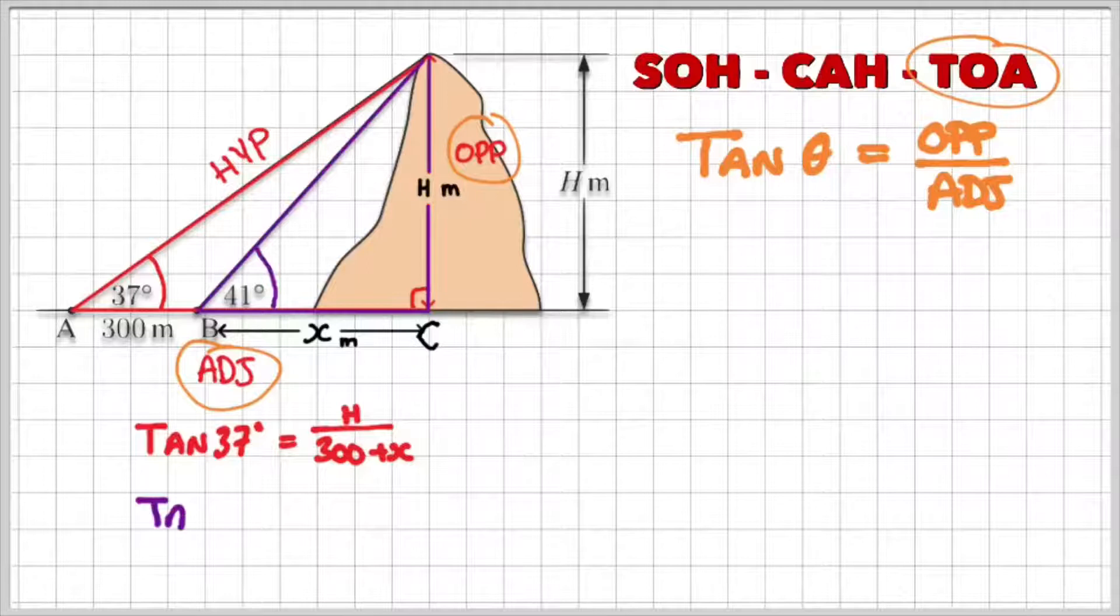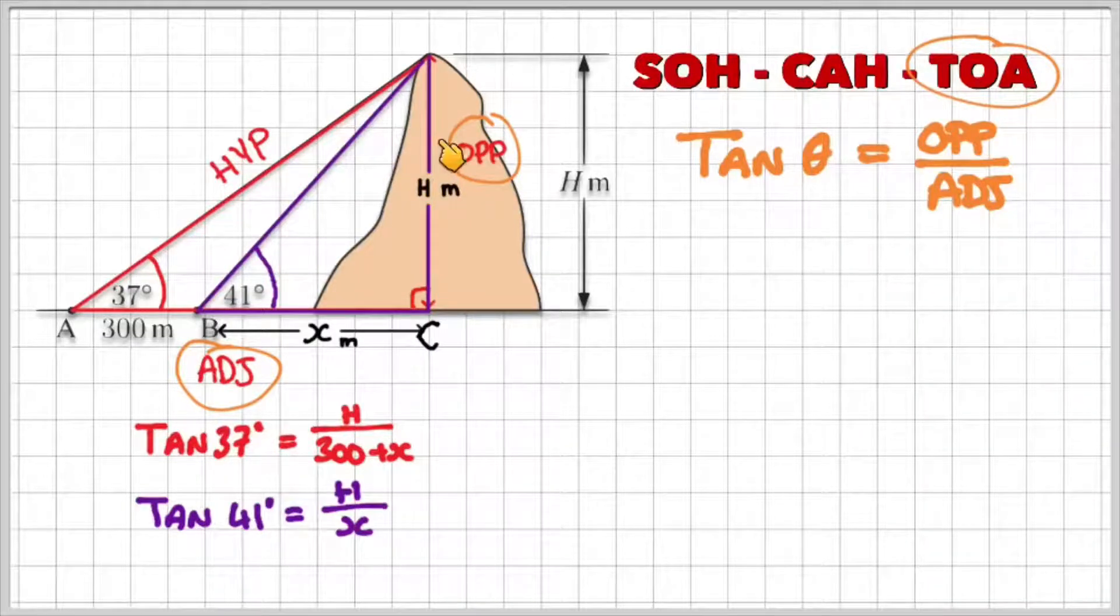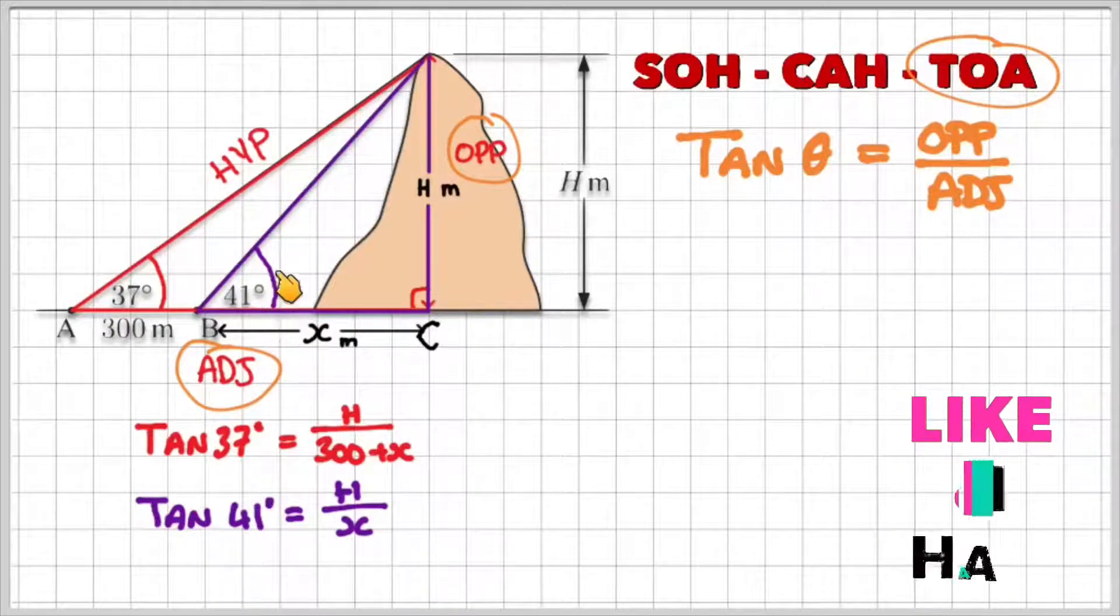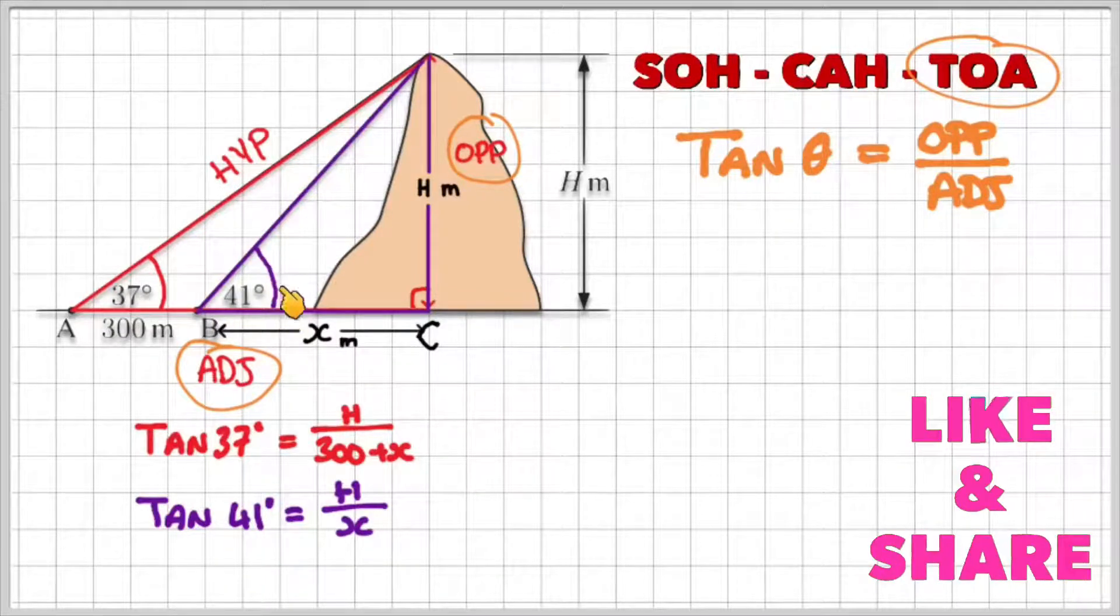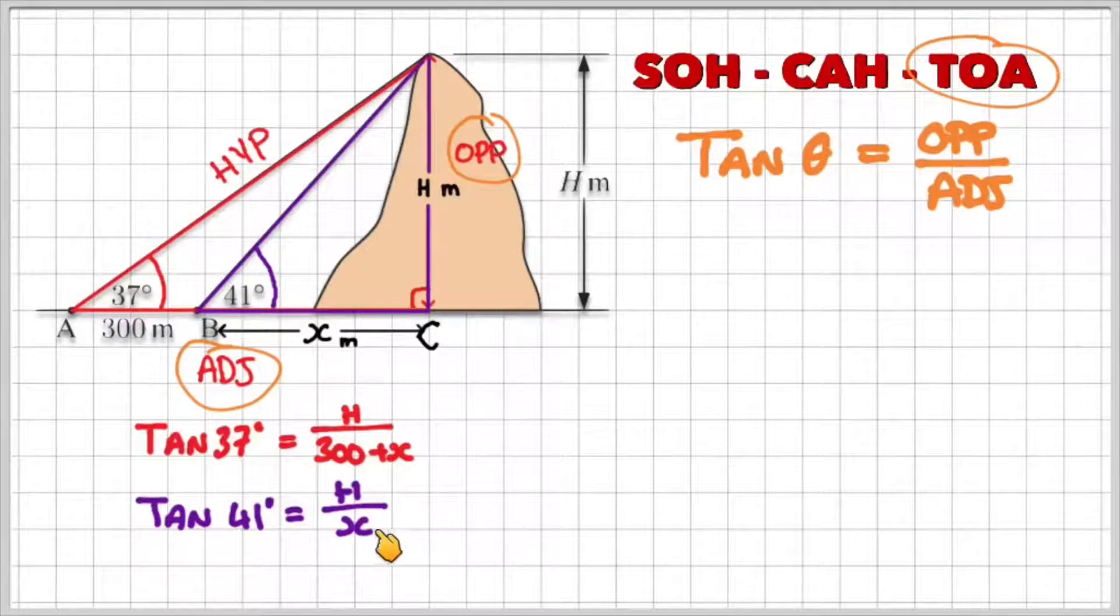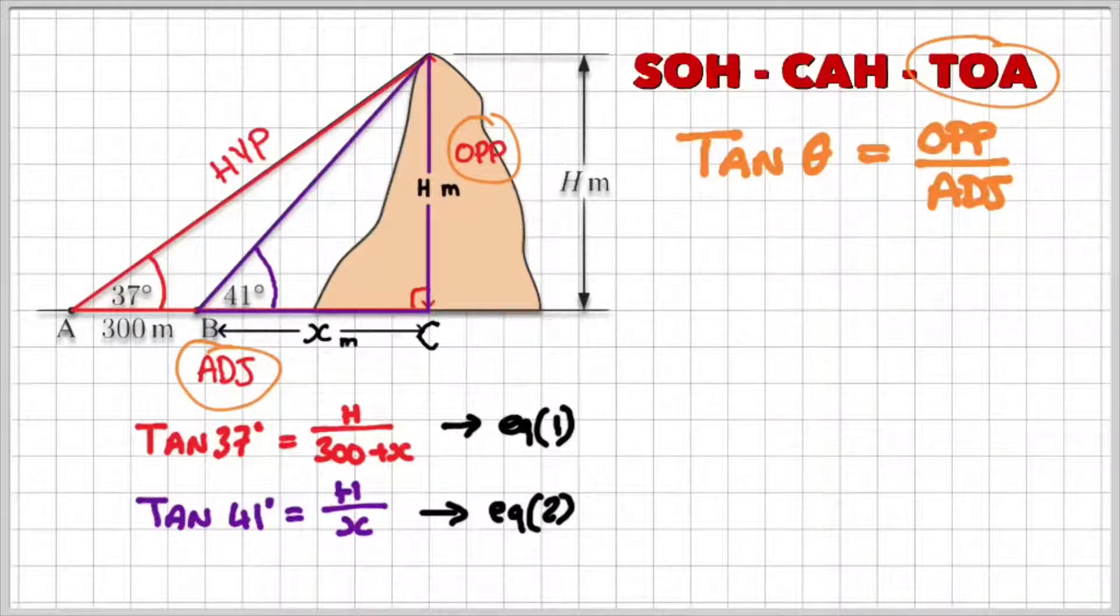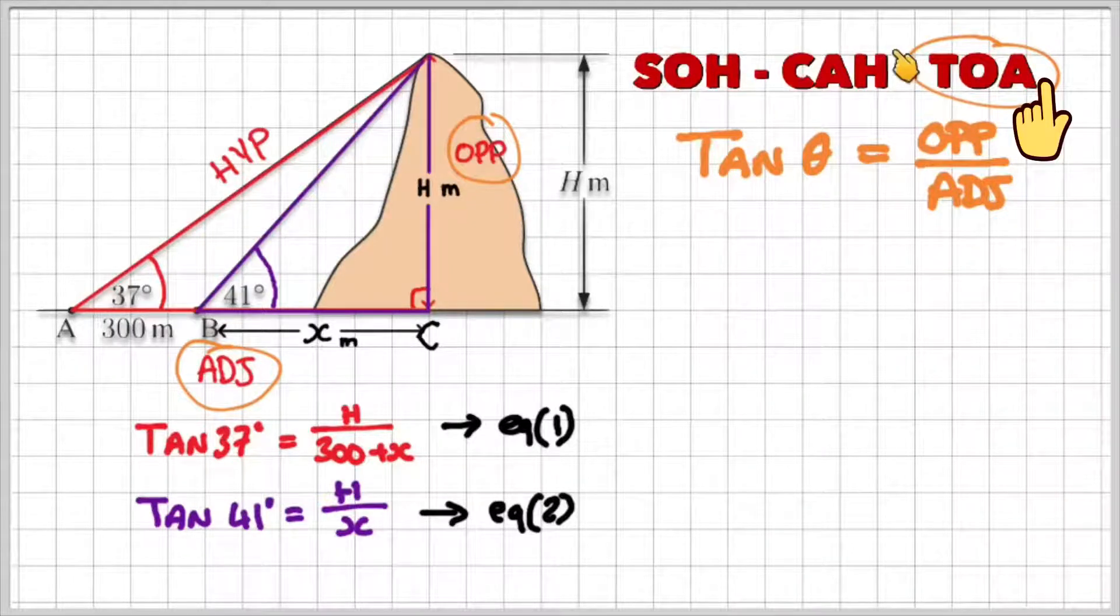Equation two, if I look at this smaller triangle, I've got tan 41, because that's my angle of elevation from the horizontal, which is equal to the opposite, h over x, and x is my adjacent. So if I label that equation one and equation two, so what I have now is a system of equations that I can solve simultaneously. I will link in the cards above the videos to how to solve simultaneous equations using the substitution and the elimination method. And you can find the links in the description below.